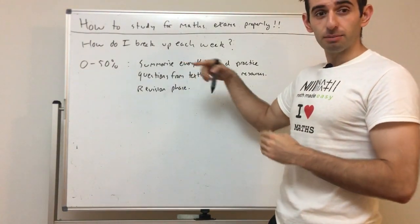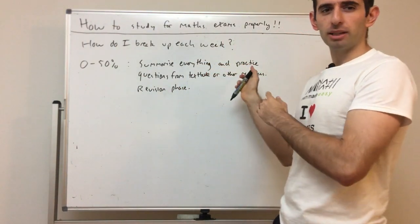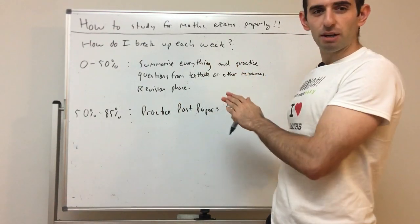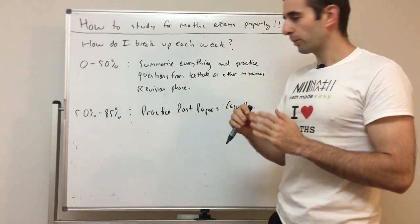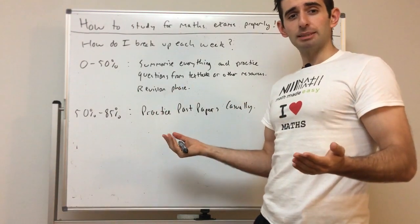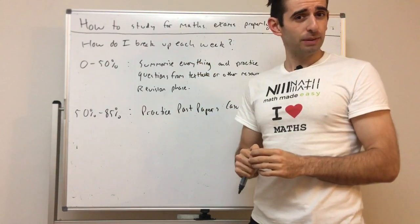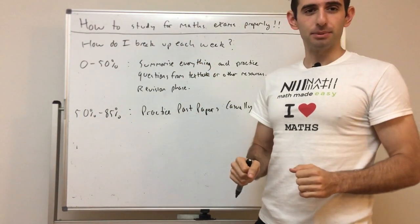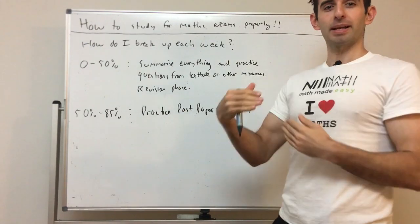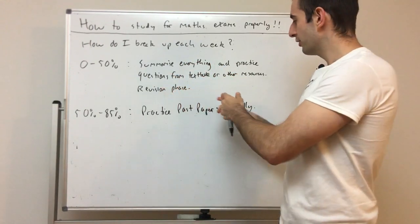From 50 to 85%, which is probably the last two or three weeks, practice past papers casually. What does that mean? Get a lot of past papers and just do them in your own time. Have all your formulas out because in an exam you probably don't have those with you. Practice those past papers. These are the best studying material for exams because they replicate the exam. If you want to do well on the exam, do questions that are similar and do a lot of them.